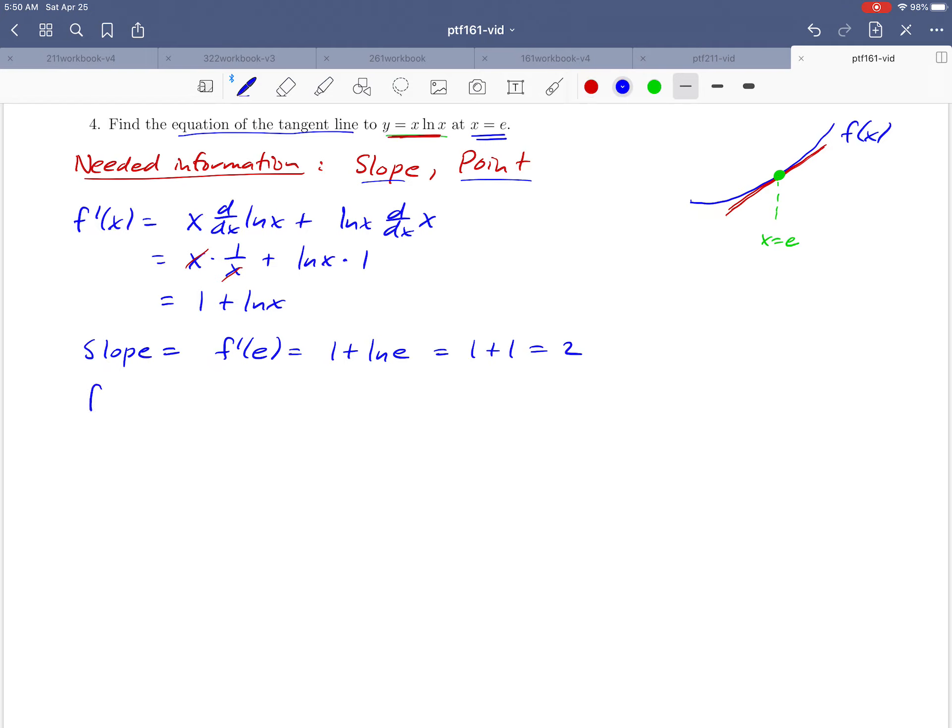The calculation we'd like to do is just to take f of e. So if we do that, substitute that into the original function, we're going to get e ln of e. And because natural log of e is one again, that's just going to give us a value of e. So basically putting that all together, we substituted in e, we got out e. So that means that the point (e, e) is on our tangent line.